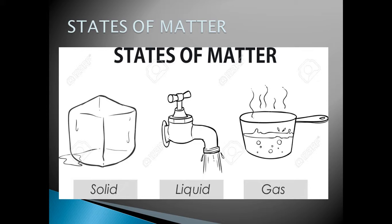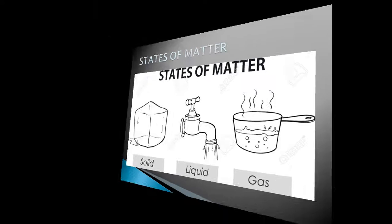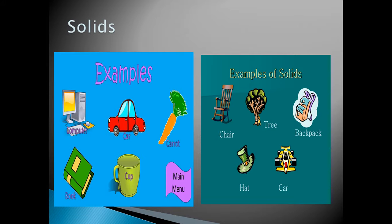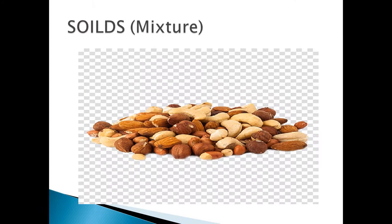What is solid? Solid is a state of matter that has its own shape. Computer, carrot, book, cup, chair, tree, your bag, and car — all these are examples of solid, because solid has its own shape.